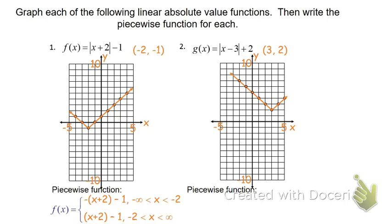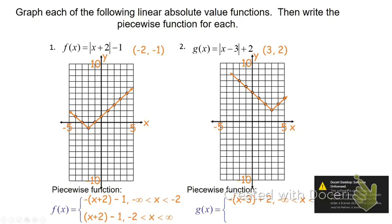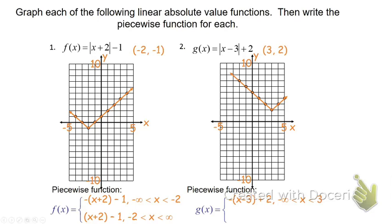As for the piecewise form, g of x equals: the first part has a negative 1 slope and passes through the point 3, 2, so it's negative quantity x minus 3, plus 2, with the domain restriction negative infinity less than x less than 3. To the right of this point the slope is no longer negative, so instead we write the quantity x minus 3, plus 2, from the domain 3 to infinity.